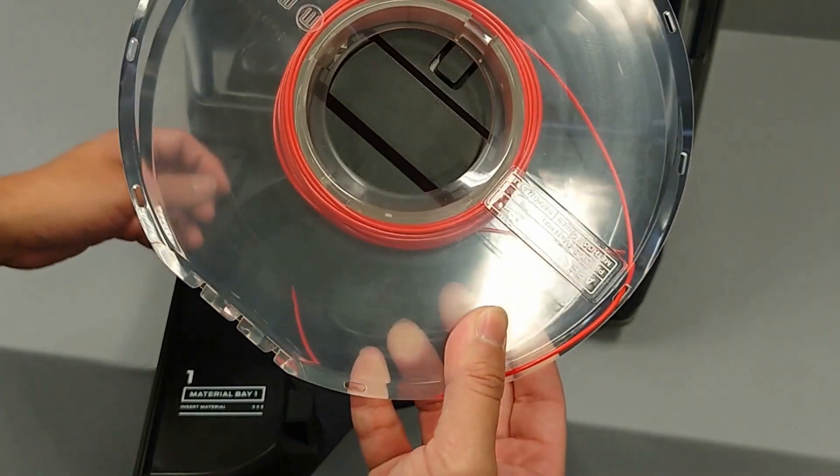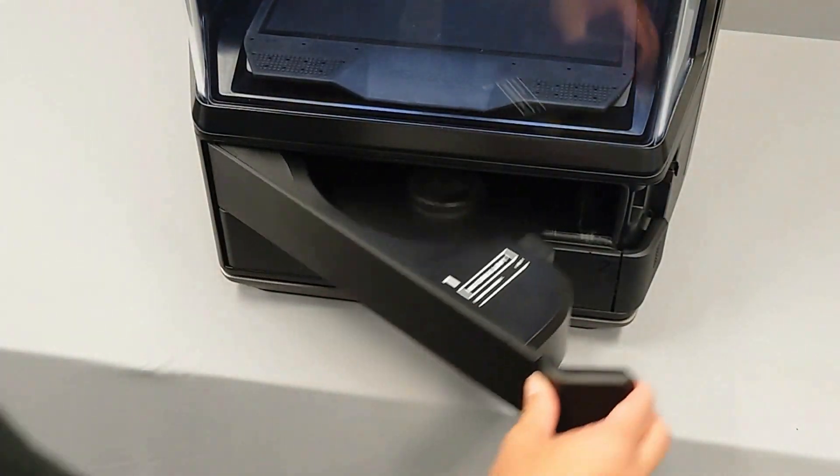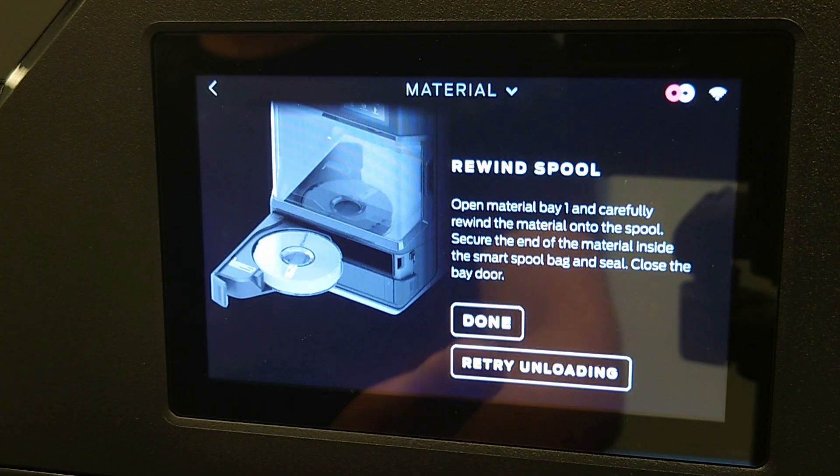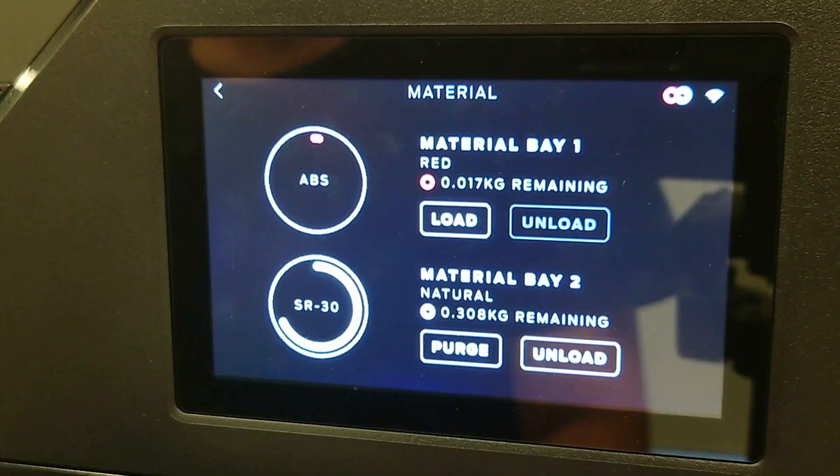Once unloaded, remove the spool from the bay. On the interface, you'll need to confirm that the spool is rewound by selecting done. You'll then be redirected to the material screen.